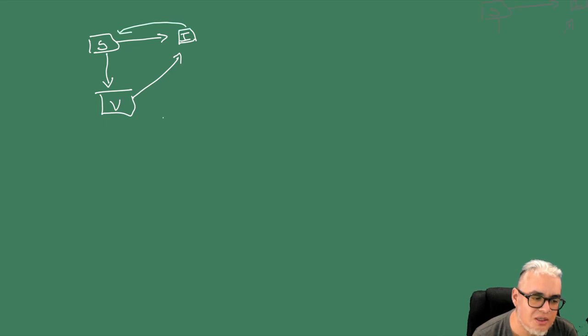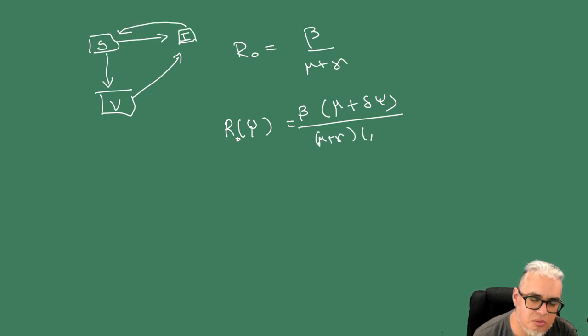Calculamos un R0 que tenía que ver con la campaña de vacunación. El R0 sin la campaña de vacunación sería beta sobre mu más gamma, donde estas eran tasas de salida. Y la R que tenía que ver ya con la vacunación es beta por mu más delta xi sobre mu más gamma por mu más xi, donde la xi es la tasa de vacunación.